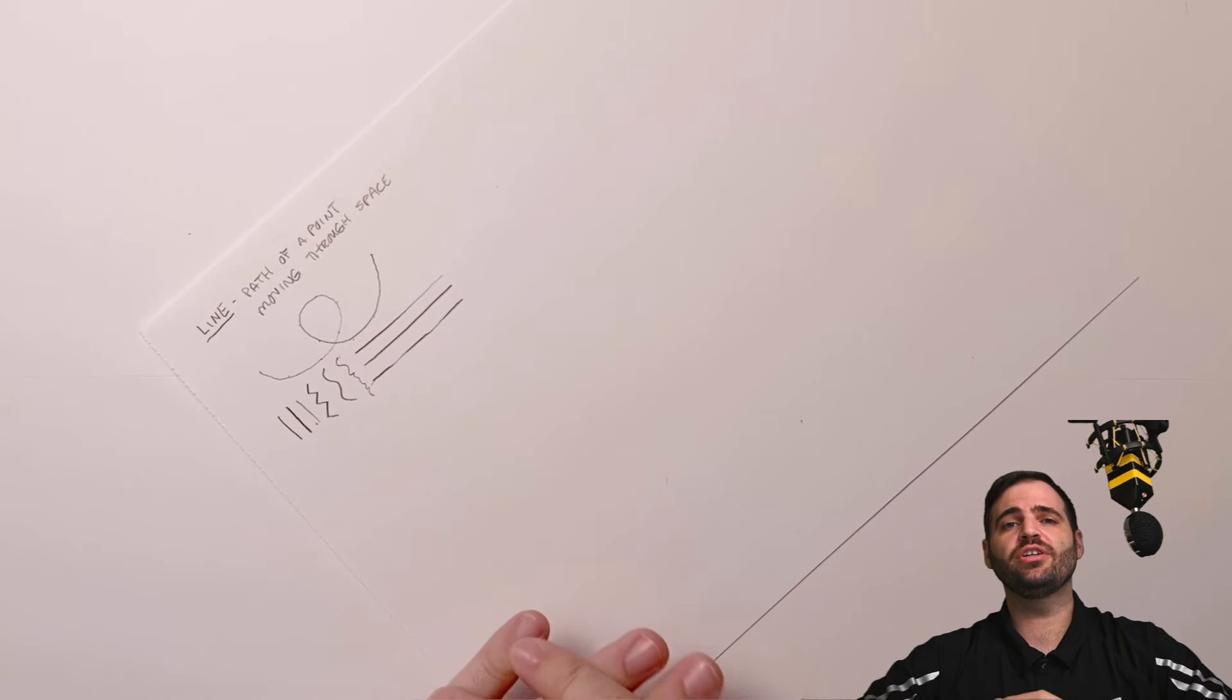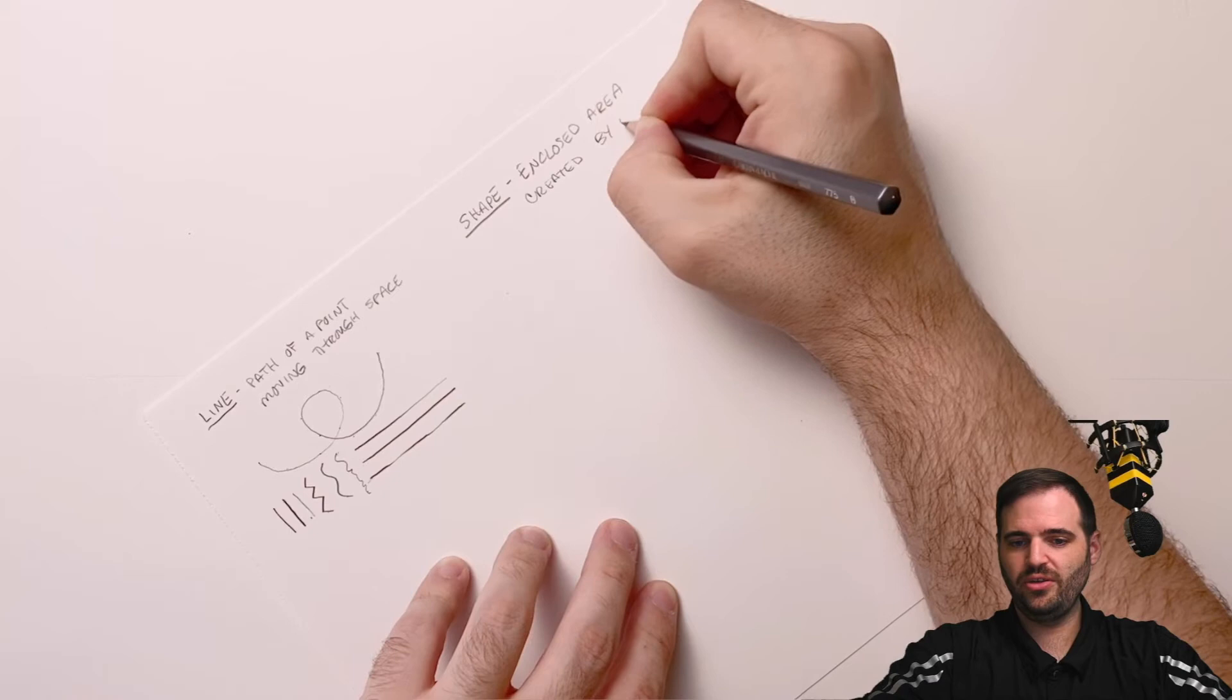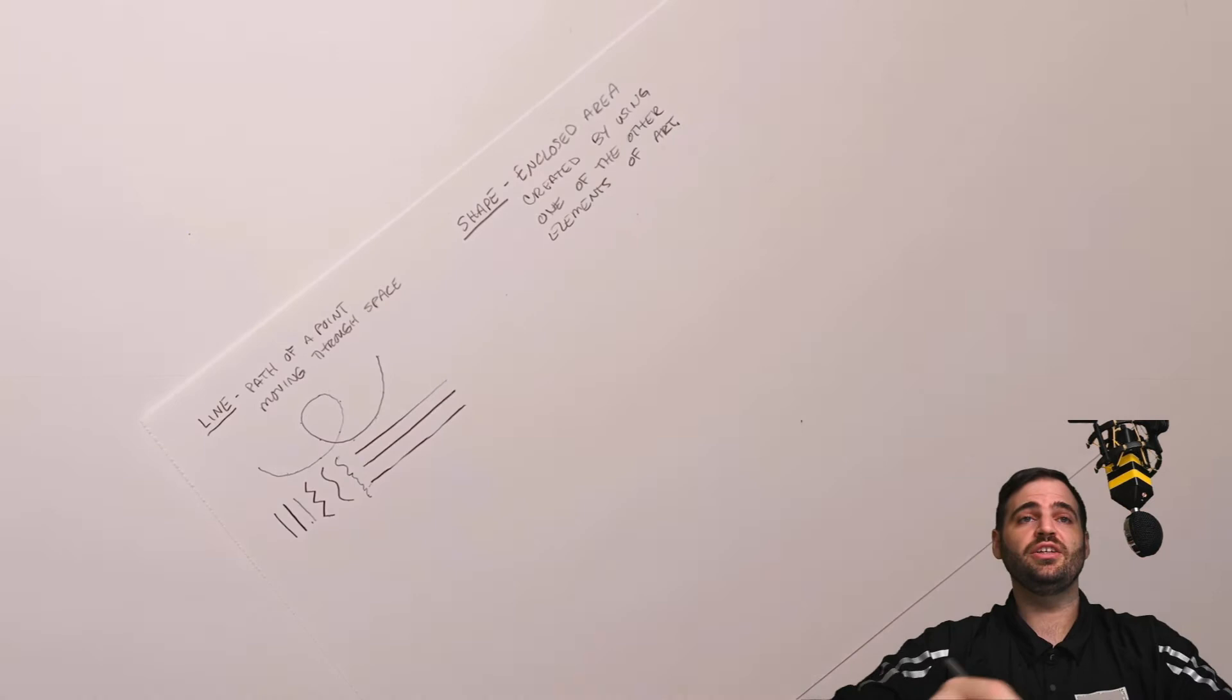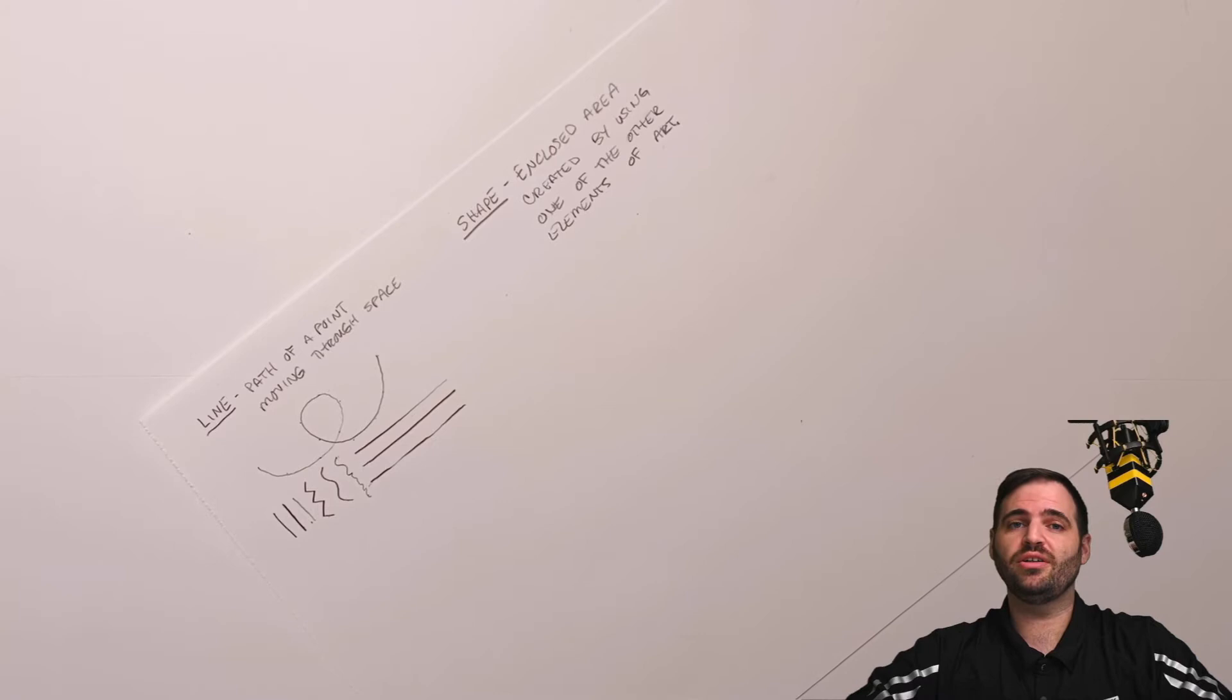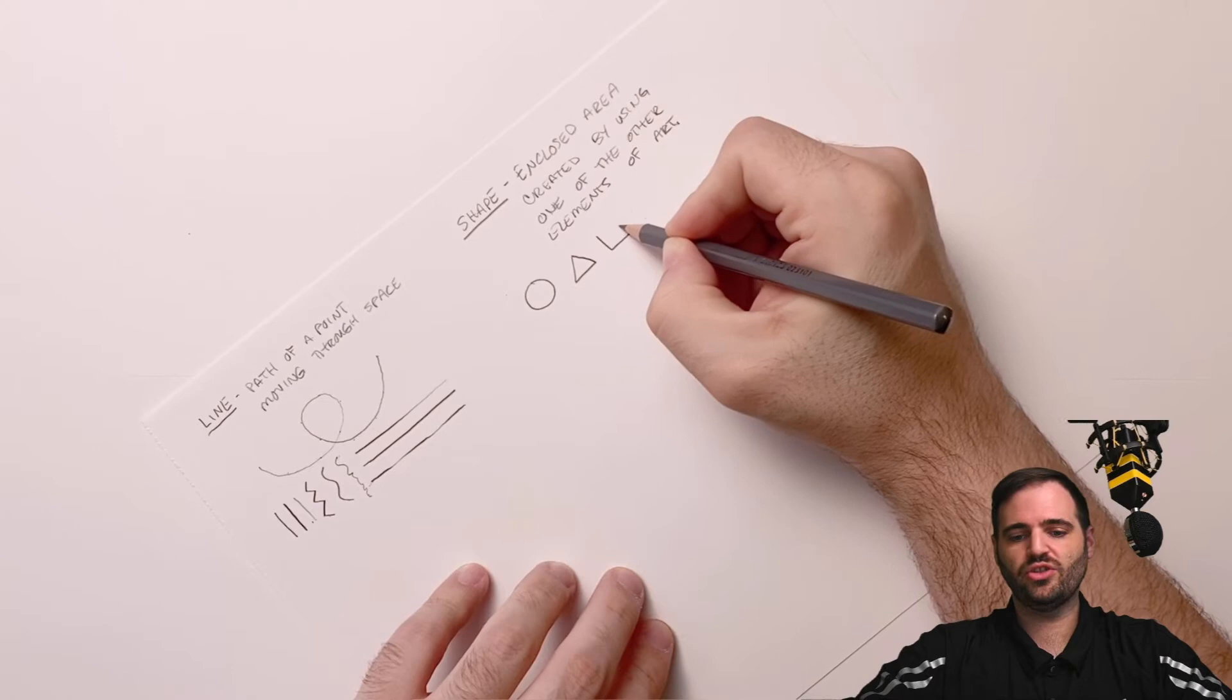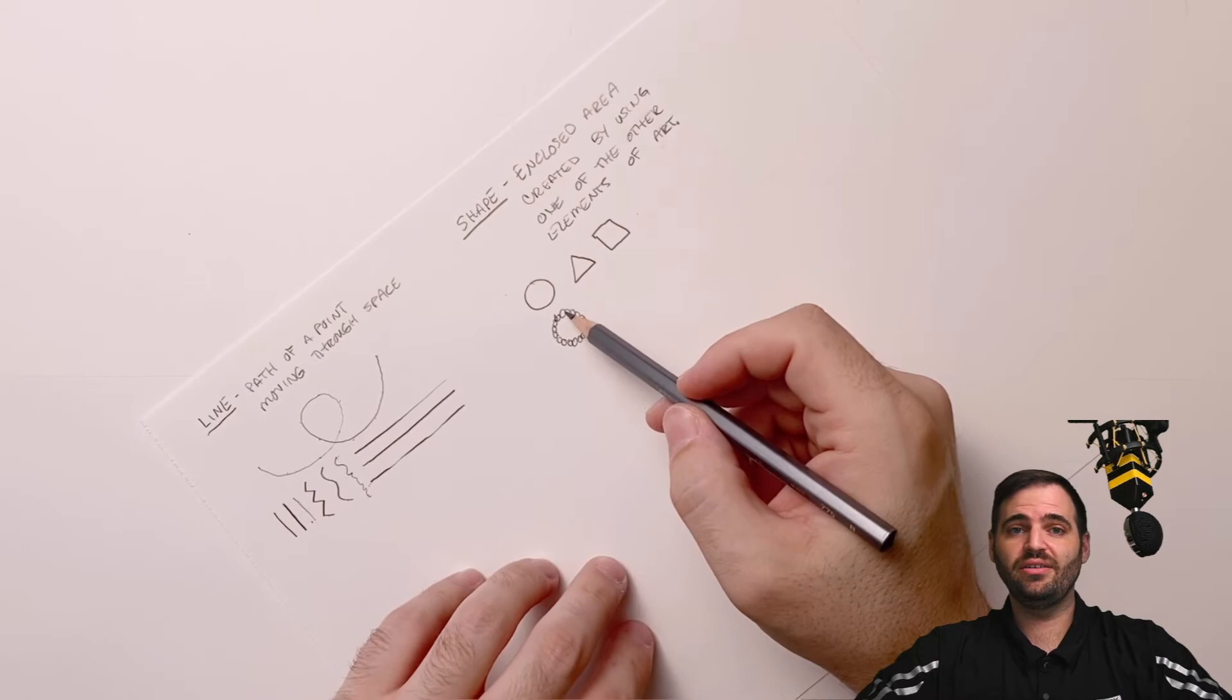The next element of art we're going to talk about, after line, is shape. Shape is an enclosed area created by using one of the other elements of art. The most basic way to draw a shape is with line, so let's draw a couple of shapes. Here we have a circle, we have a triangle, we can draw a square. That's a really awful square. Now let's try using another element of art. Let's use shapes to make shapes. Here I've made a circle out of circles. I could make a triangle out of triangles or a square out of squares. That's one element of art you can make into others.